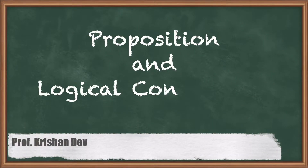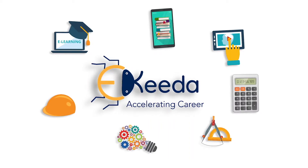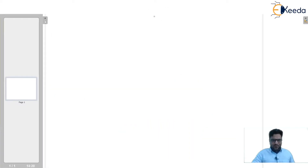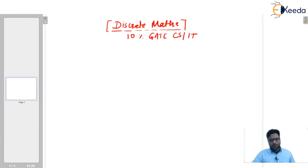Hello friends, today I am going to start propositions and logical connectives. Let us begin with discrete mathematics. If we talk about the weightage of discrete maths, that is about 10% in GATE CSIT. This is a very important subject from a GATE point of view.